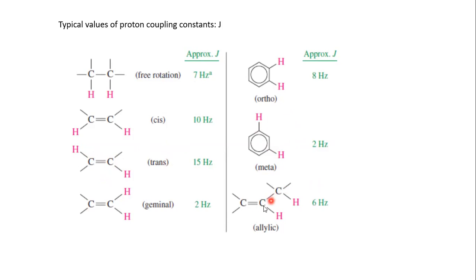A special case is allylic coupling: the adjacent carbon to the doubly bonded carbon is the allylic carbon. The double bond attracts electron pairs toward it, making the allylic position slightly deshielded. If two protons are allylic to one another, they will couple since they are non-equivalent, and their coupling constant is approximately 6 Hz. These are approximate J values.